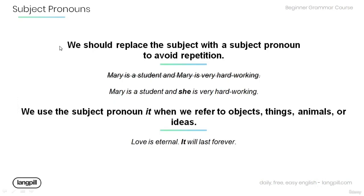We should replace the subject with a subject pronoun to avoid repetition. For example, 'Mary is a student and Mary is very hard working' — the repetition of the proper noun 'Mary' should be avoided. We should say something like 'Mary is a student and she is very hard working,' where 'she' refers to Mary.